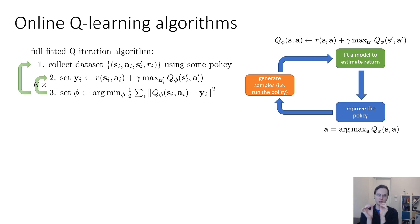All right, now let's discuss a few special cases of fitted Q iteration, which correspond to very popular algorithms in the literature. So far, the generic form of fitted Q learning that we talked about has these three steps: collect the data set, evaluate your target values, train your neural network parameters to fit those target values, and then alternate these two steps k times, and then after k times, go out and collect more data.